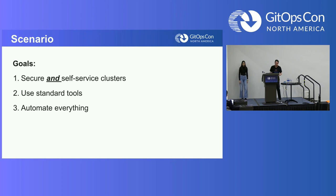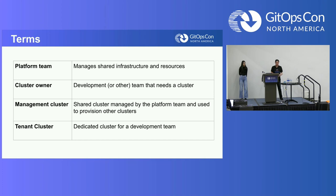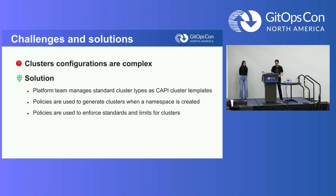For the demo, the goal was to use a combination of tools to see how policies can help offer secure self-service clusters to teams within an organization, using standard tools like kubectl, and making this completely automated end-to-end. Terminology: a platform team manages infrastructure, policy sets, and shared services; a cluster owner requests a cluster and has full cluster admin permissions; and there is a management cluster used to provision new clusters via Cluster API, and tenant clusters used by teams.